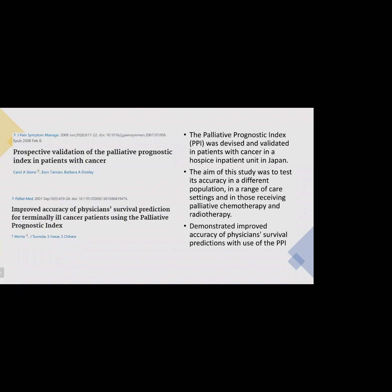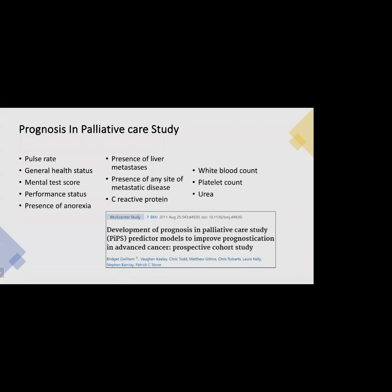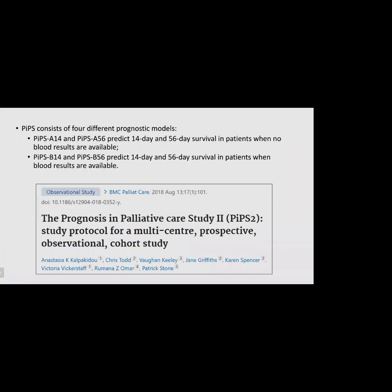The last tool is the prognosis in palliative care study (PIPS). On multivariate analysis, 11 core variables were independently predictive of both two-week and two-month survival, including pulse rate, general health status, mental test score, performance status, presence of anorexia, any site of metastatic disease, liver metastasis, CRP, WBC, platelet count, and urea. PIPS consists of four models: PIPS A14 and A56 predict 14-day and 56-day survival when no blood tests are available; PIPS B14 and B56 predict 14-day and 56-day survival incorporating blood results.